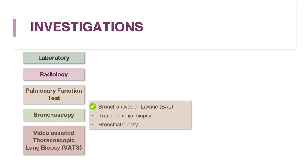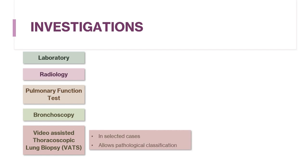Bronchoscopy with bronchoalveolar lavage may give differential cell counts and point to sarcoidosis, drug-induced pneumonitis, pulmonary eosinophilia, hypersensitivity pneumonitis, or cryptogenic organizing pneumonia. It is also of value in excluding infection. Transbronchial biopsy is useful in diagnosing sarcoidosis and excluding differentials like malignancy or infection. Bronchial biopsy is occasionally useful in sarcoidosis. Video-assisted thoracoscopic lung biopsy (VATS) is done in selected cases to help with pathological classification; the presence of asbestos bodies may suggest asbestosis and silica particles occupational fibrosing lung disease.